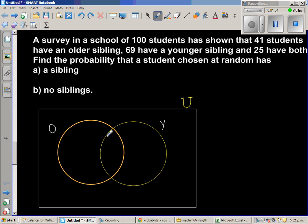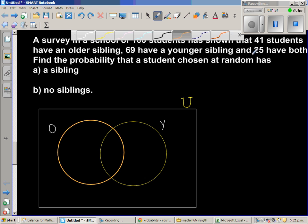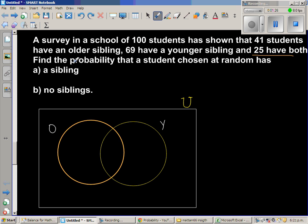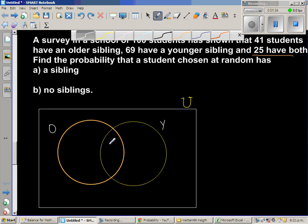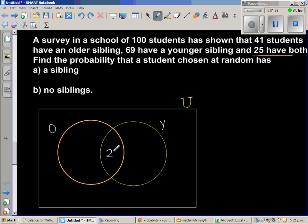Now this area is the area which is common for O, that is the older sibling, and the younger sibling. So first when we are writing numbers inside this Venn diagram, we should write whatever is inside this area. So here I read that 25 have both, that means 25 students have younger and older siblings. So I will write 25 here in this area.